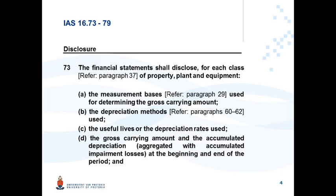IAS 16 Paragraphs 73 to 79 address the disclosure requirements of Property, Plant and Equipment items in the annual financial statements of a company.